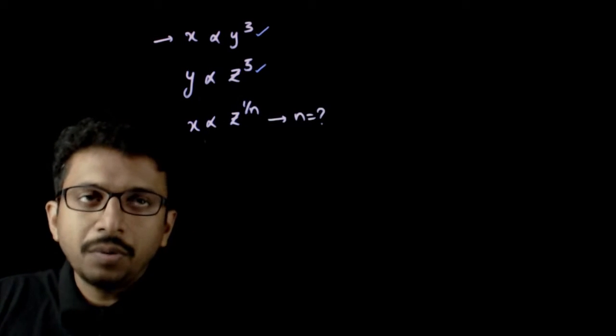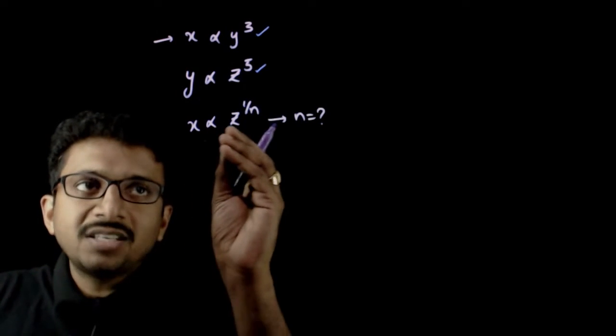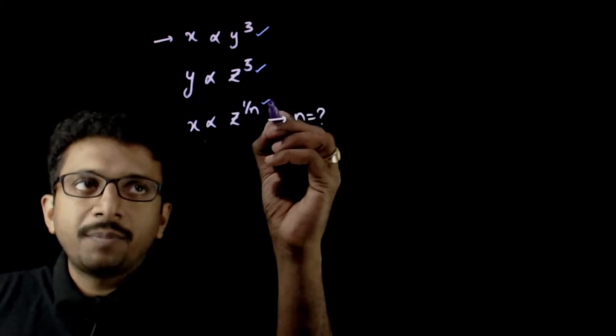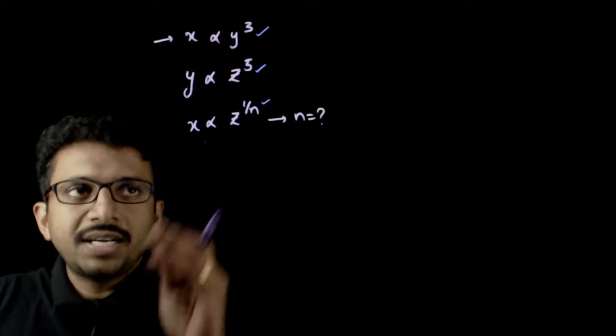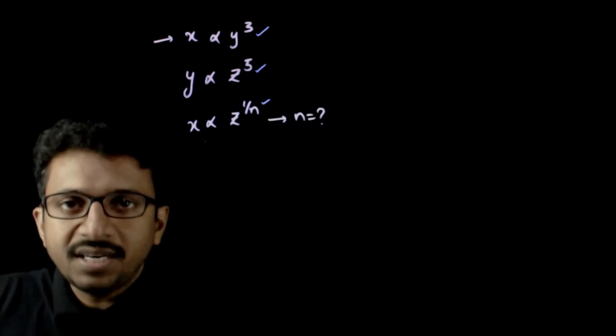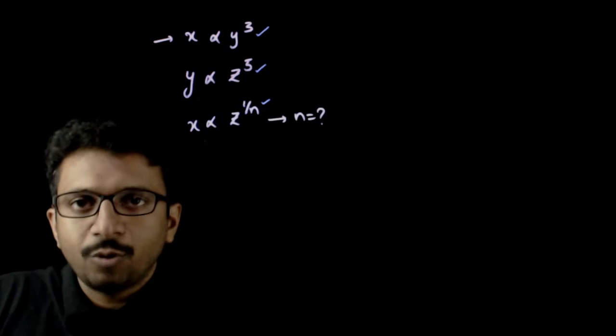If that is so, x is proportional to z power 1 by n, so n is equal to what? x is proportional to the nth root of z, so n is equal to how much?